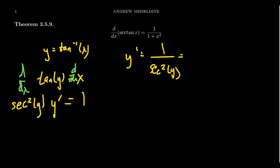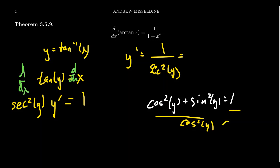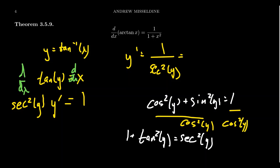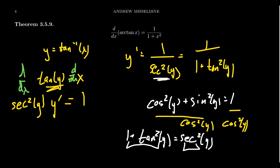Using our favorite trigonometric identity — the Pythagorean identity: cosine squared y plus sine squared y equals 1. If you divide both sides by cosine squared, the left-hand side gives cosine squared over cosine squared, which is 1, plus sine squared over cosine squared, which is tangent squared, and 1 over cosine squared is secant squared. So we end up with 1 plus tangent squared equals secant squared. Notice we have a secant squared in the denominator, so it can be written as 1 plus tangent squared of y. Since tangent of y equals x, this gives us the formula 1 over 1 plus x squared.